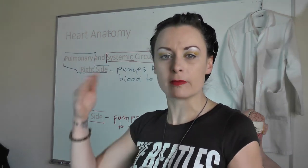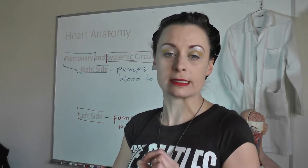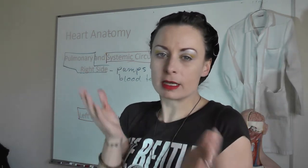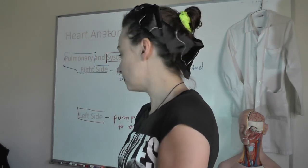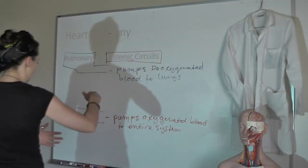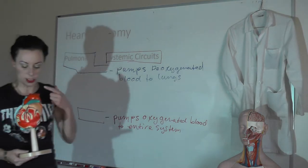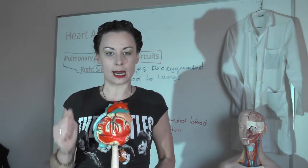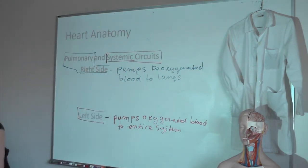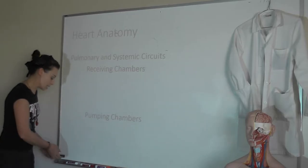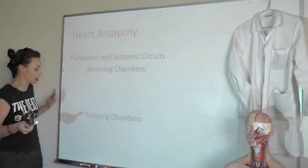When we talk about the pathway of blood through the heart, by convention we start in the right atrium. If you're following one blood cell, it goes through the pulmonary circuit first, then through the systemic circuit. But you could start anywhere. Blood is pumping through both sides of the heart at the same time. I have this model here — the left side pumps blood to the systemic circuit, and the right side pumps blood to the pulmonary circuit.